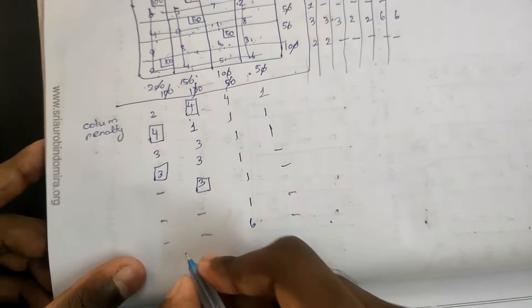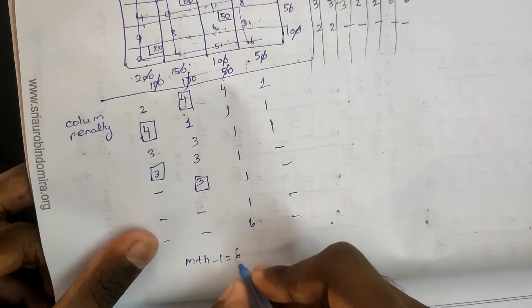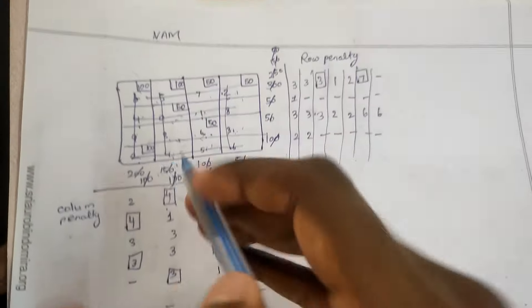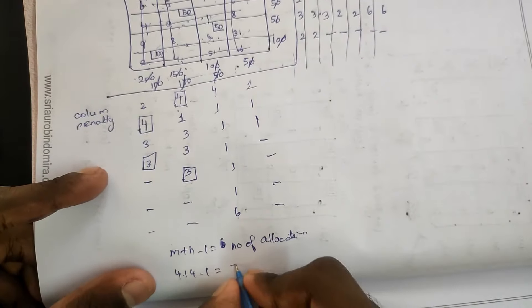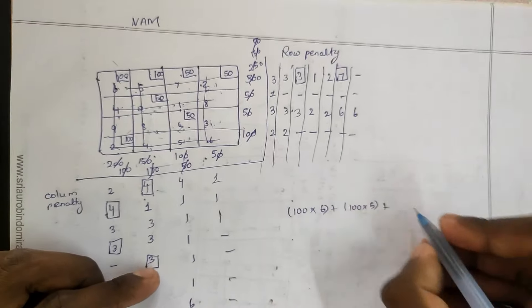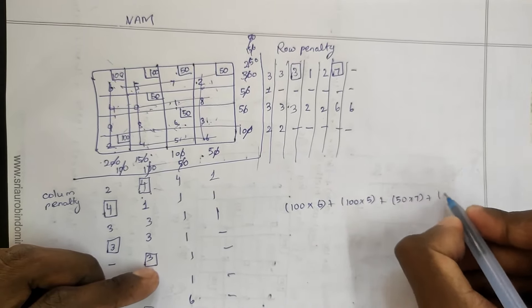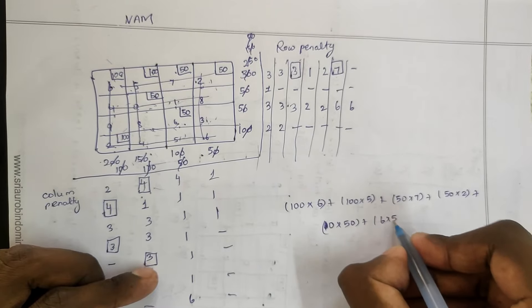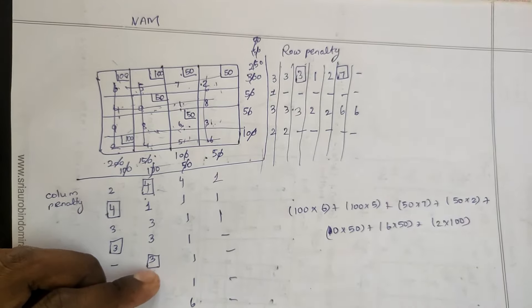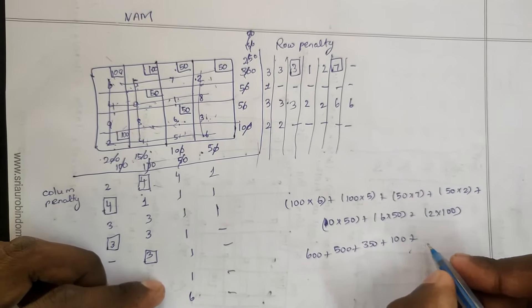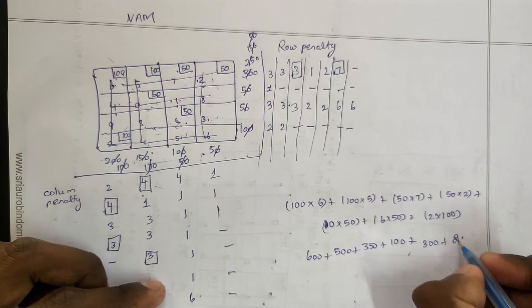Now, total cost. m plus n minus 1 equals the number of allocations. m equals 4, n equals 4, so 4 plus 4 minus 1 equals 7. Counting allocations: 1, 2, 3, 4, 5, 6, 7 — so 7 allocated. 7 equals 7, optimum solution. Total cost: 100×6 plus 100×5 plus 50×7 plus 50×2 plus 0×50 plus 6×50 plus 2×100. That is 600 plus 500 equals 1,100, plus 350 equals 1,450, plus 100 equals 1,450, plus 300 equals 1,750, plus 200 equals 1,950. So total cost is 1,950.